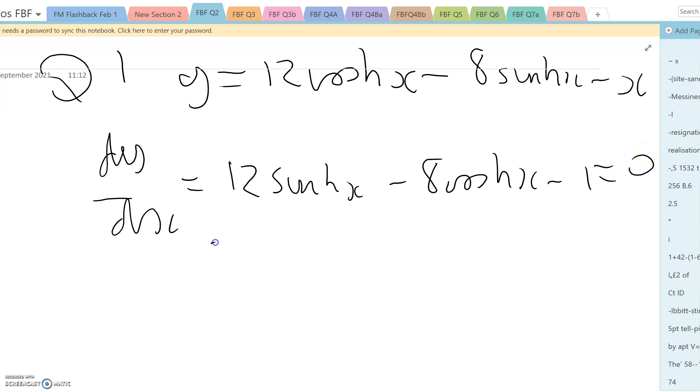We turn this into e's, and it's 6 e^x minus e to the minus x, minus 4 e^x plus e to the minus x, and that's got to equal 1, and that reduces to 2 e^x.